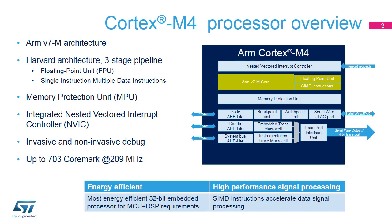The Cortex-M4 core is part of the ARM Cortex-M group of 32-bit RISC cores. It implements the ARMv7M architecture and features a three-stage pipeline. In addition to scalar integer instructions, it also supports a single-precision floating-point unit and SIMD integer instructions useful to improve the performance of DSP algorithms.